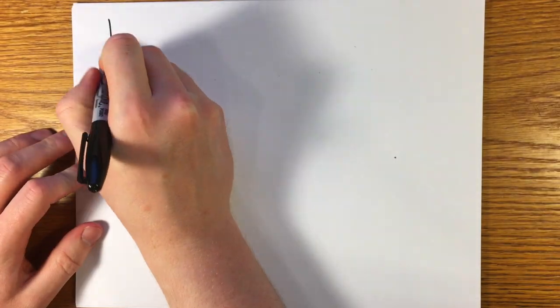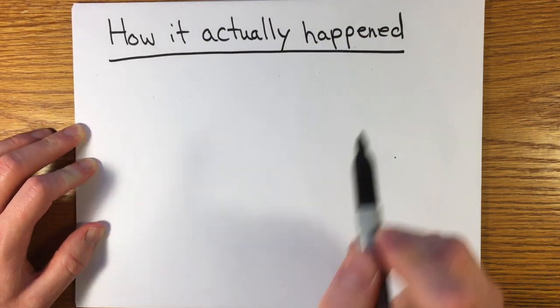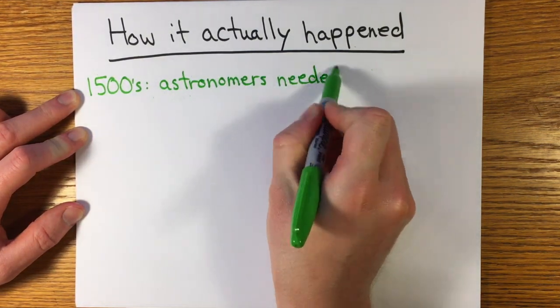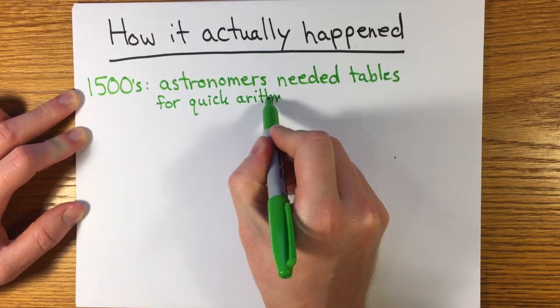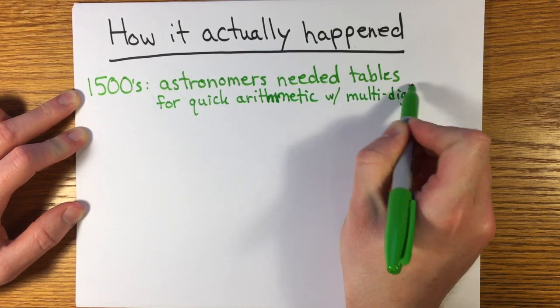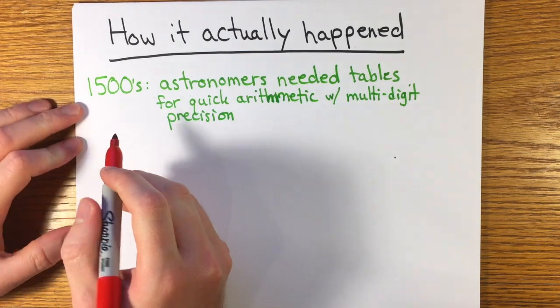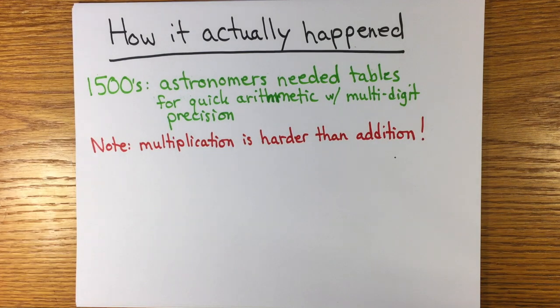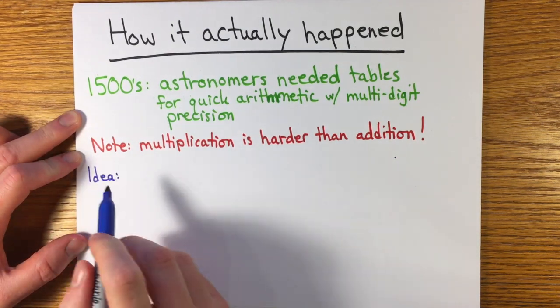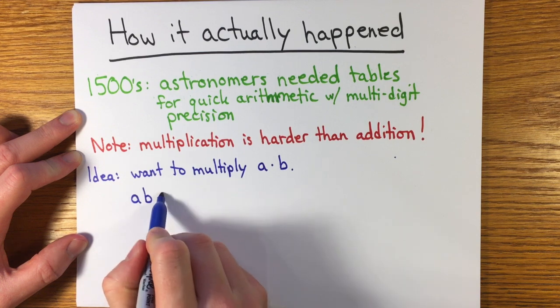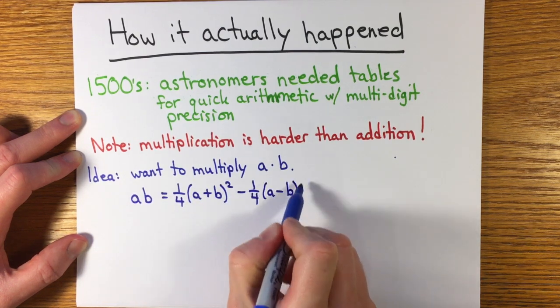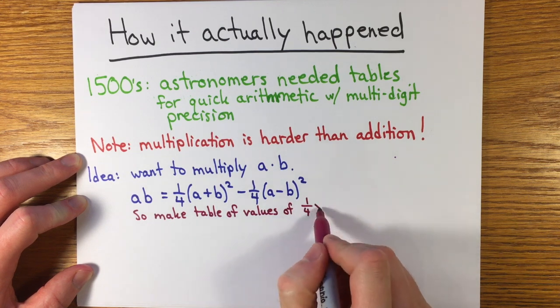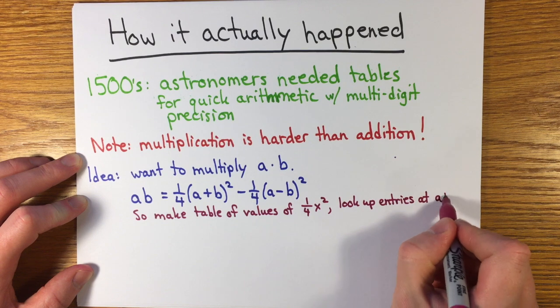So those are all the directions which could have led people to the exponential function and the logarithm, but now let's discuss how it actually happened. John Napier did not set out to define a new function, but to provide astronomers and navigators with a useful table to calculate with seven decimal digits of accuracy. It's hard to imagine, but back then there were no calculators, and when in the 1500s people wanted to do calculations quickly, they relied on lookups to extensive tables. Remember that multiplication is computationally harder than addition. Consider this method of multiplying two numbers.